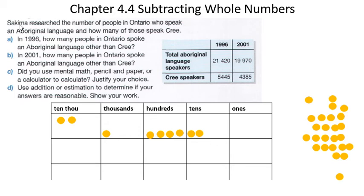Sakima researched the number of people in Ontario who speak an Aboriginal language, and how many of those speak Cree. In 1996, how many people in Ontario spoke an Aboriginal language other than Cree? Here's our 1996 column, here are our total number of Aboriginal speakers, and here we have our Cree. I've taken this 21,420 and labeled it down here in our place value chart.